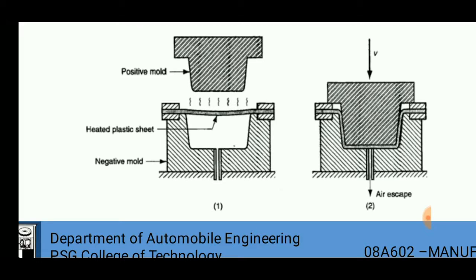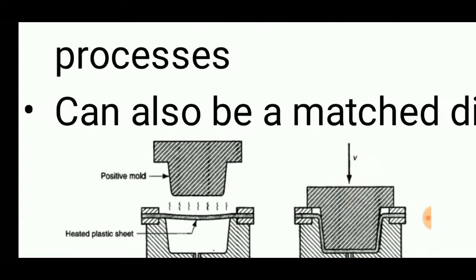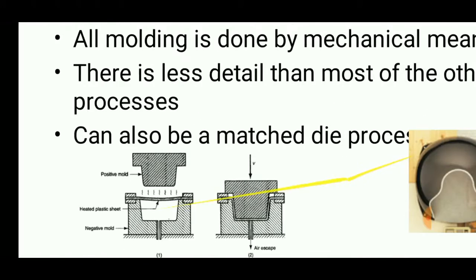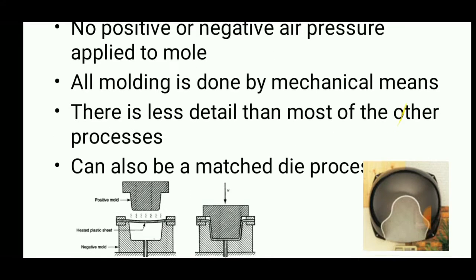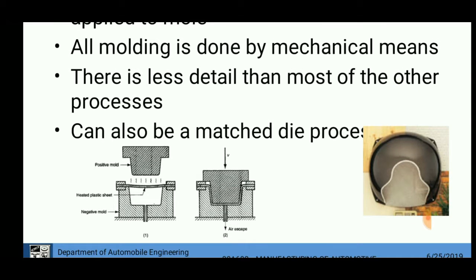By this, we can design any number of positive and negative molds and get our desired shape. It can be used to get high tolerance, high quality, and high accuracy products. No positive or negative air pressure is applied to the mold, and it can also be called as a matched die process.